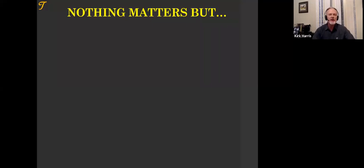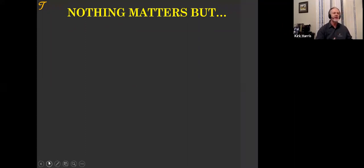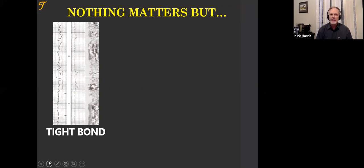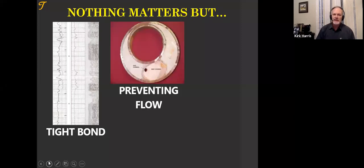When it comes to slurry design, nothing matters but four things. The first is that the slurry provides a tight bond — it's very important that the cement grips the casing and bonds to the formation. That matters when pumping cements to prevent corrosion, trap CO2, and keep it from leaking. The second is that the slurry design prevents gas flow.